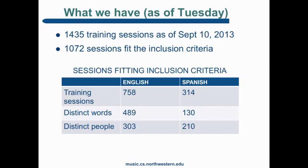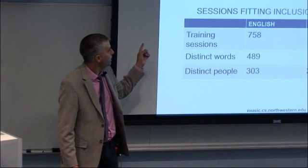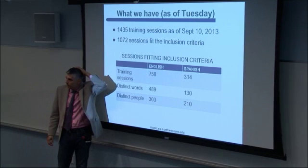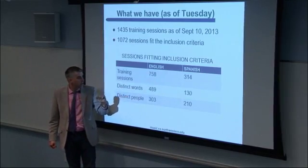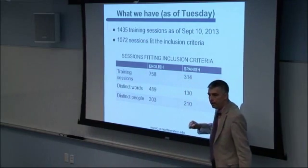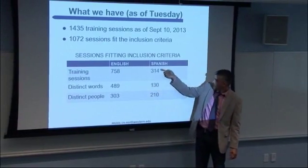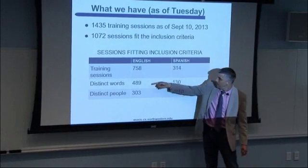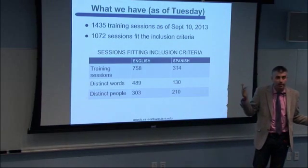As of yesterday, we've had 1,435 training sessions, of which slightly over 1,000 fit our criteria. Of these, 758 turned out to have a word in the English dictionary and 314 had a word in the Spanish dictionary, representing many distinct words. On average, about three people are teaching the same word in Spanish and about two in English. The distribution follows something like Zipf's law.